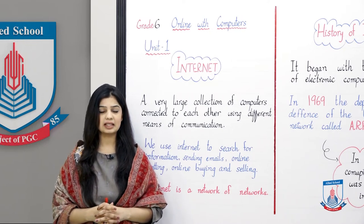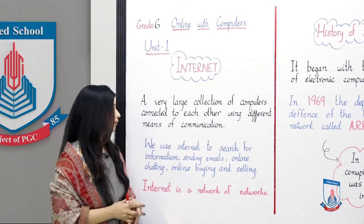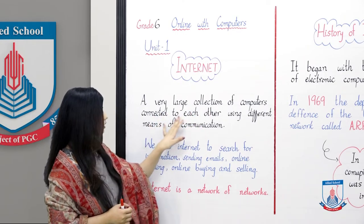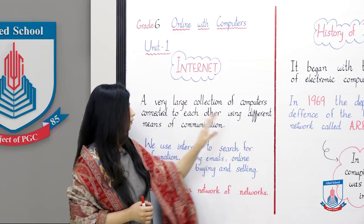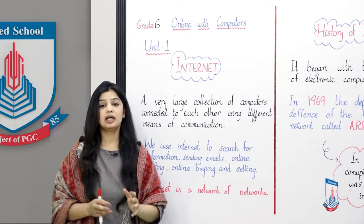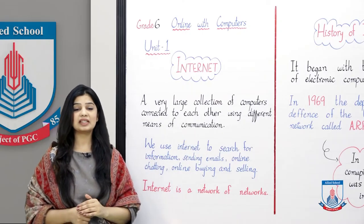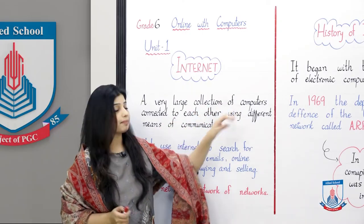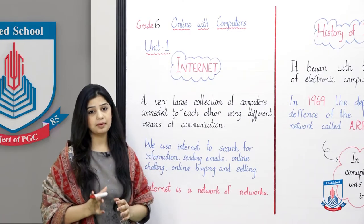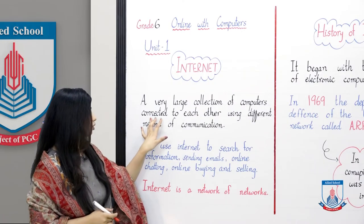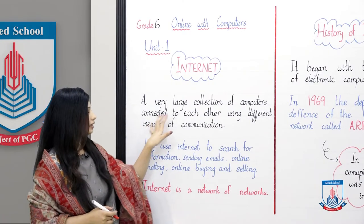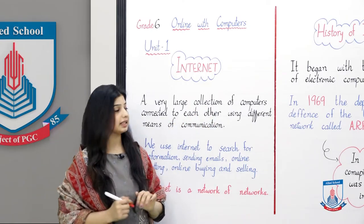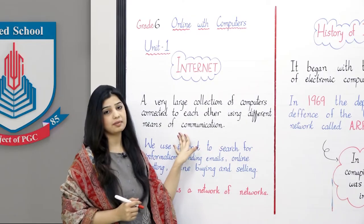Now let's look at the definition of internet. A very large collection of computers is connected to each other using different means of communication. So internet is basically a very large collection of computers which are connected to each other.